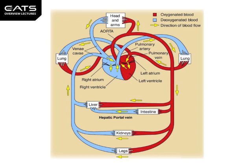These arteries go to the head and arms, and to other parts of the body such as the liver, intestine, kidneys, and legs. In the tissues and organs, metabolism is occurring — food is being burnt with oxygen — so the arteries are carrying oxygenated blood.